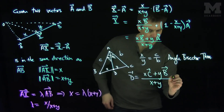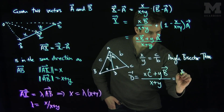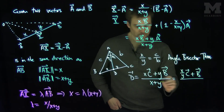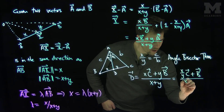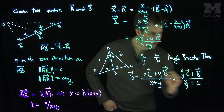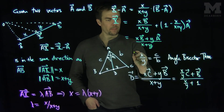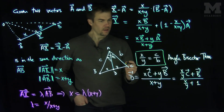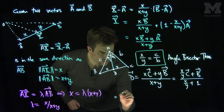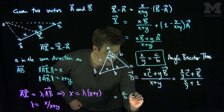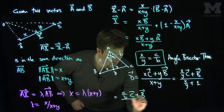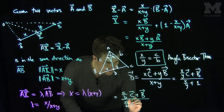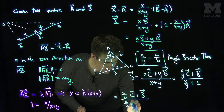If I divide the whole expression by y, I get (x/y)·C plus B, over (x/y) plus 1. By the angle bisector theorem, x over y equals c over b, so I can replace x/y with c/b. This gives (c/b)·C plus B, over (c/b) plus 1.